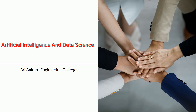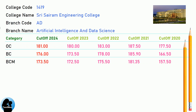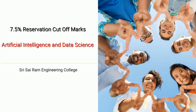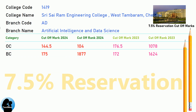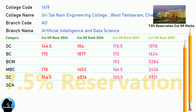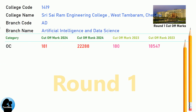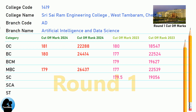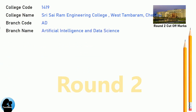DNA Cut-off for Shri Sairam Engineering College in Artificial Intelligence and Data Science. DNA 7.5 Reservation Cut-off for Shri Sairam Engineering College in Artificial Intelligence and Data Science. DNA Round 1 Cut-off for Shri Sairam Engineering College in Artificial Intelligence and Data Science. DNA Round 2 Cut-off for Shri Sairam Engineering College in Artificial Intelligence and Data Science.